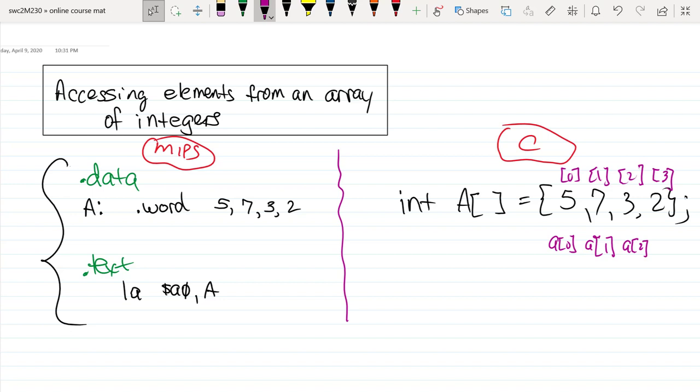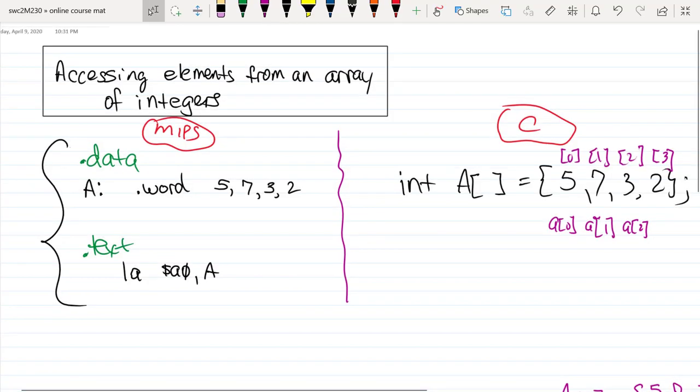An area of memory reserved for an array. So the setup for this is what we see over here on the right, what we would normally see with C code. We have a declaration, there's an array that's sitting there in memory with the elements 5, 7, 3, and 2.